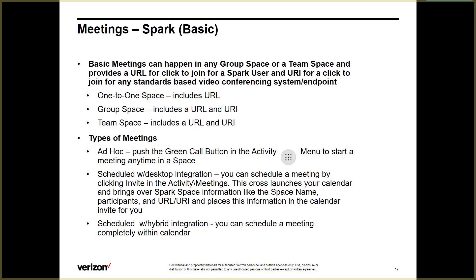When it cross-launches your calendar, it pulls over the space name as the subject in Outlook, brings in all the participants from the space automatically, and brings in the URL and URI so people can click to join the meeting. You schedule the meeting for whatever time you want, and when the reminder comes up in Outlook, you have those links to cross-launch and join the meeting inside your Spark client.